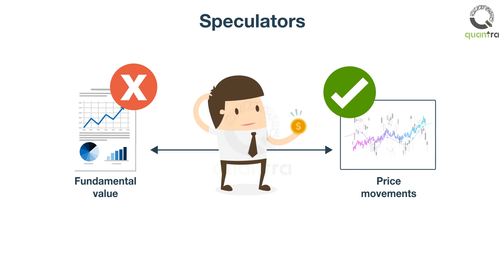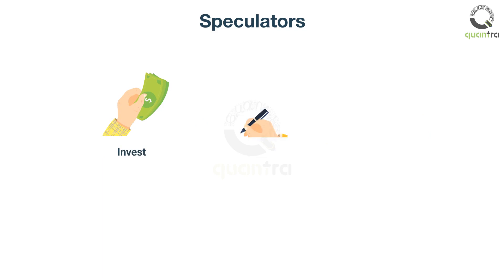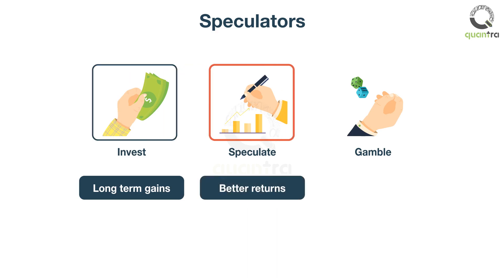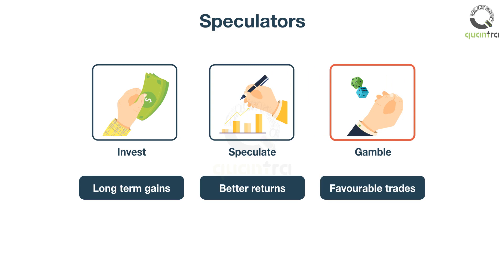Many traders simultaneously invest, speculate, or gamble. They invest when they want to move money from the present to the future, that is, they expect long-term gain. They speculate when they try to use information about future security prospects to obtain a better return on their investments. They gamble when they focus more attention on favorable outcomes than on losing outcomes.